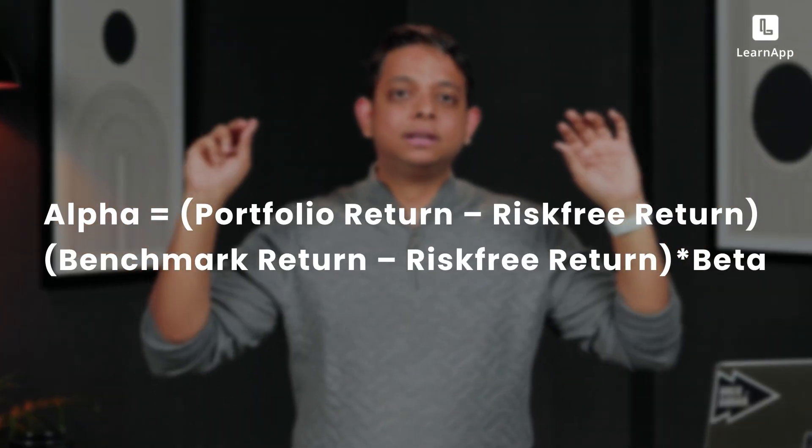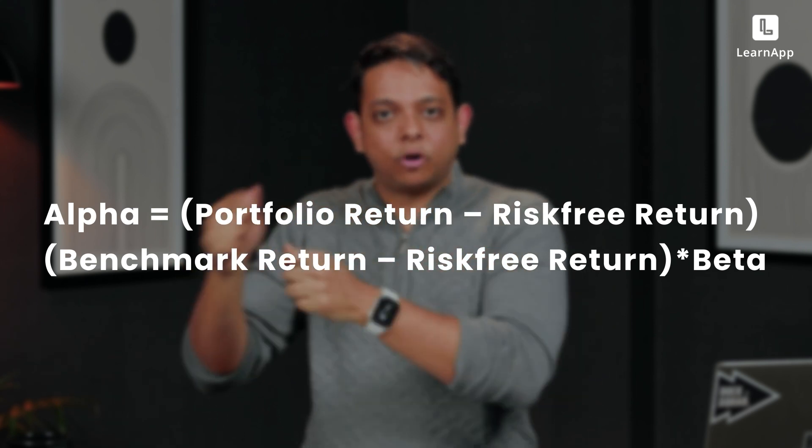This is a very simple way of calculating alpha to understand it. The real formula is a lot more complicated, but I oversimplified it so it's easy for you. As long as you understood the concept of alpha, all good. Alpha gives you the reward relative to Nifty — also called returns. Beta is measuring risk.